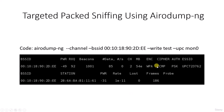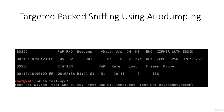This will continue running, so cancel it with Ctrl+C. When you cancel, it will save everything into a log file named test_utp. You can list the files created — as you can see there are several files with different extensions: some have .cap, some have .csv, and one has a kismet.netxml extension.